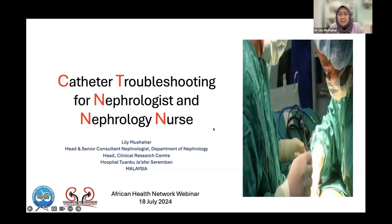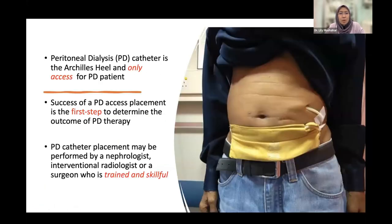Thank you, Brad, for the kind introduction. Good evening, everyone. I would like to thank AHN for having me here today to share my talk on catheter troubleshooting for nephrologists and nephrology nurses. As you all know, the PD catheter is the Achilles heel and the only access for PD patients. For hemodialysis, if you have a problematic vascular access, you can put in a dialysis catheter in the IJV or femoral, but for PD it is only intraperitoneally. The success of PD catheter placement is the first step to determine the outcome of PD therapy.